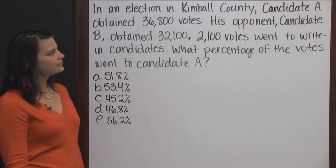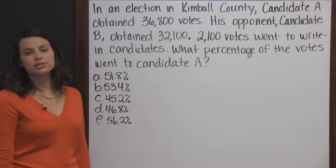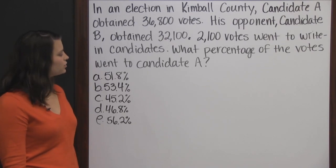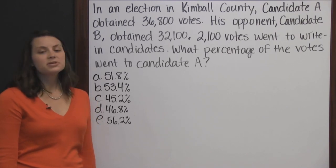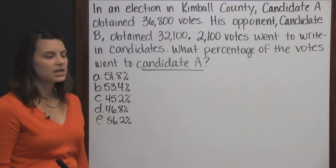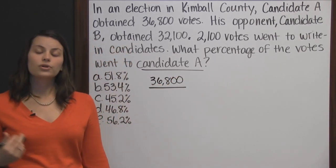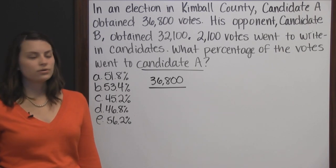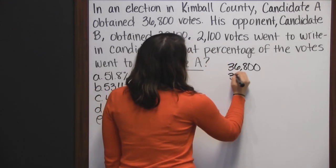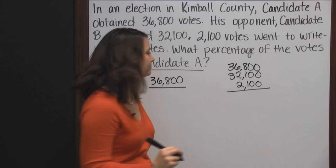In an election in Kimball County, candidate A obtained thirty-six thousand eight hundred votes. His opponent, candidate B, obtained thirty-two thousand one hundred votes. Two thousand one hundred votes went to write-in candidates. What percentage of the votes went to candidate A? To find a percent, we need the part over the whole. The part is the number of votes candidate A received — 36,800. What I need to know is the whole, the total number of votes. To find that, I need to add 36,800 plus 32,100 plus 2,100.